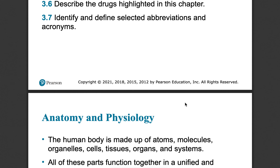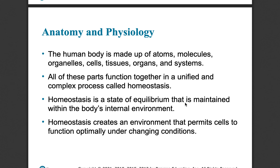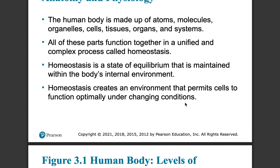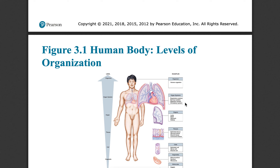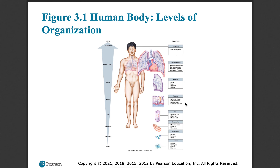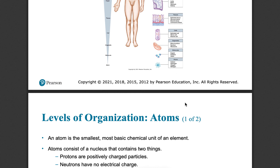We start talking about anatomy and physiology and everything starts to link. Part of that is understanding the levels of organization — going basically from elements, to atoms forming things like cells and organelles and tissues, to organs, organ systems, and eventually your entire human body.